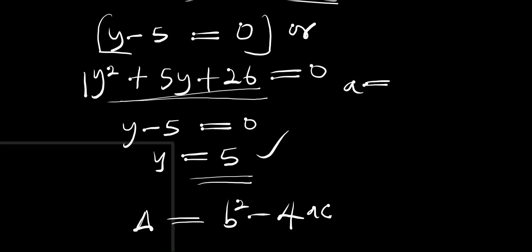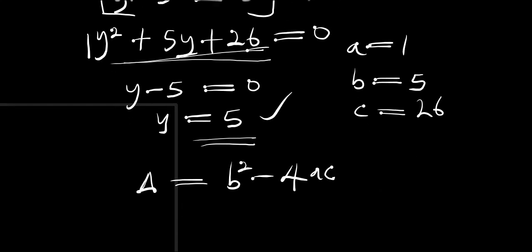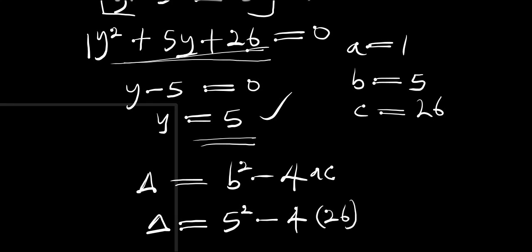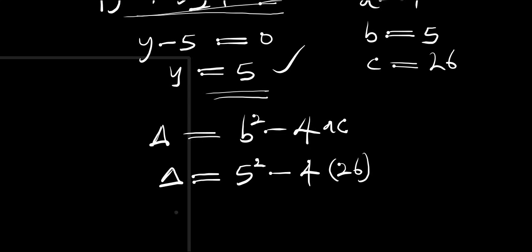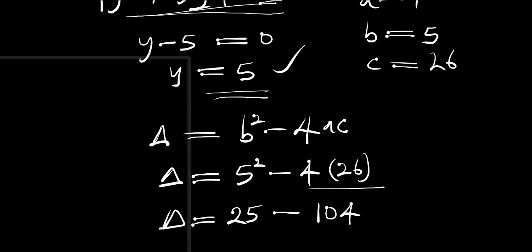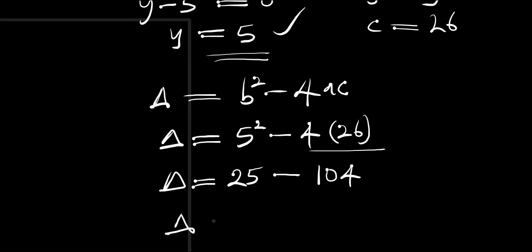From y² + 5y + 26 = 0: a equals the coefficient of y², which is 1; b equals the coefficient of y, which is 5; and c equals the constant, which is 26. So the discriminant equals b² - 4ac = 5² - 4(1)(26) = 25 - 104.